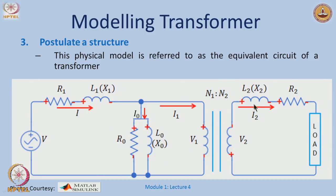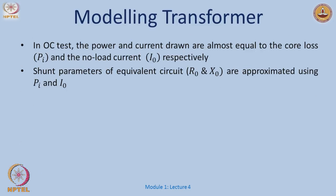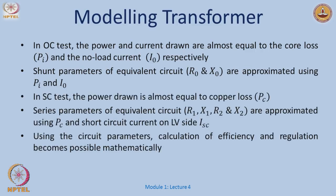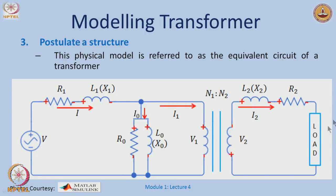Once rated current flows through I1 and I2, the core branch becomes negligible, and all losses are mainly I-squared-R losses in the primary and secondary windings. These two experiments yield all values of R1, L1, R2, L2, R0, and L0. Once these parameters are identified, the efficiency calculation becomes a basic circuit problem, solvable with pen and paper for any given power factor or resistive load.